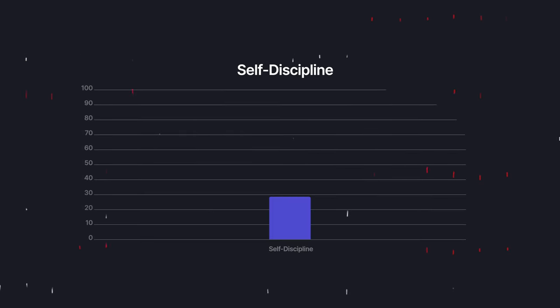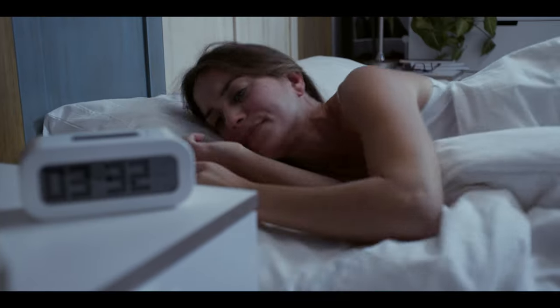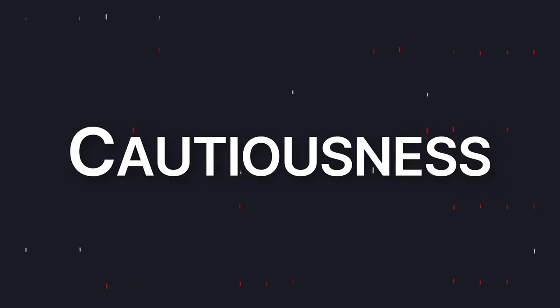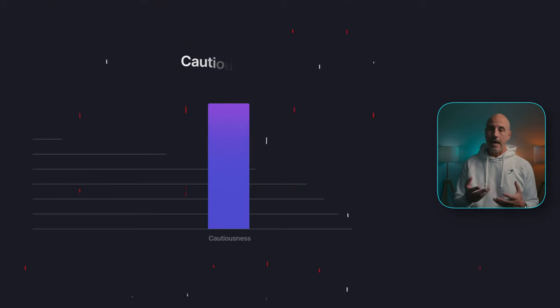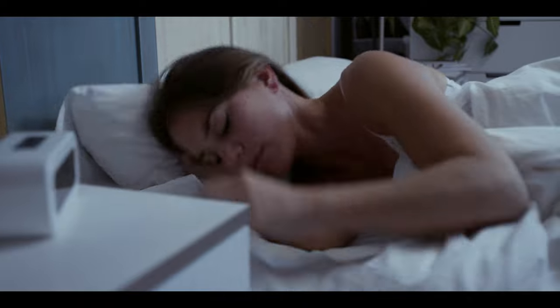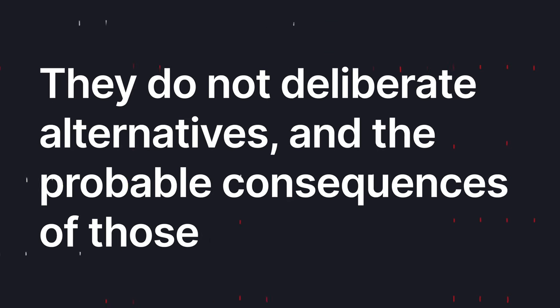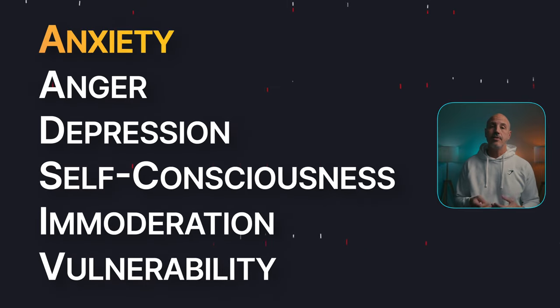Those with low self-discipline procrastinate and show poor follow-through, often failing to complete tasks even ones they want very much to complete. Cautiousness describes the disposition to think through possibilities before acting — people high in cautiousness take their time when making decisions. People low in cautiousness often say or do the first thing that comes to mind without deliberating alternatives and their probable consequences. Emotionality, or neuroticism, is made up of the categories: anxiety, anger, depression, self-consciousness, immoderation, and vulnerability.